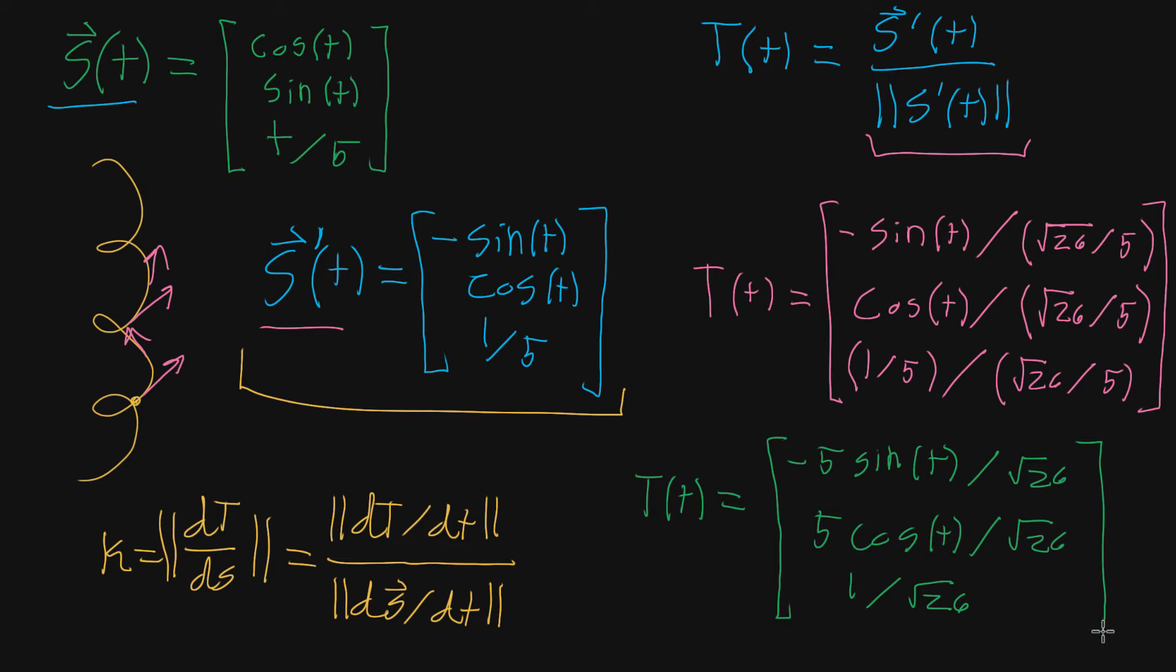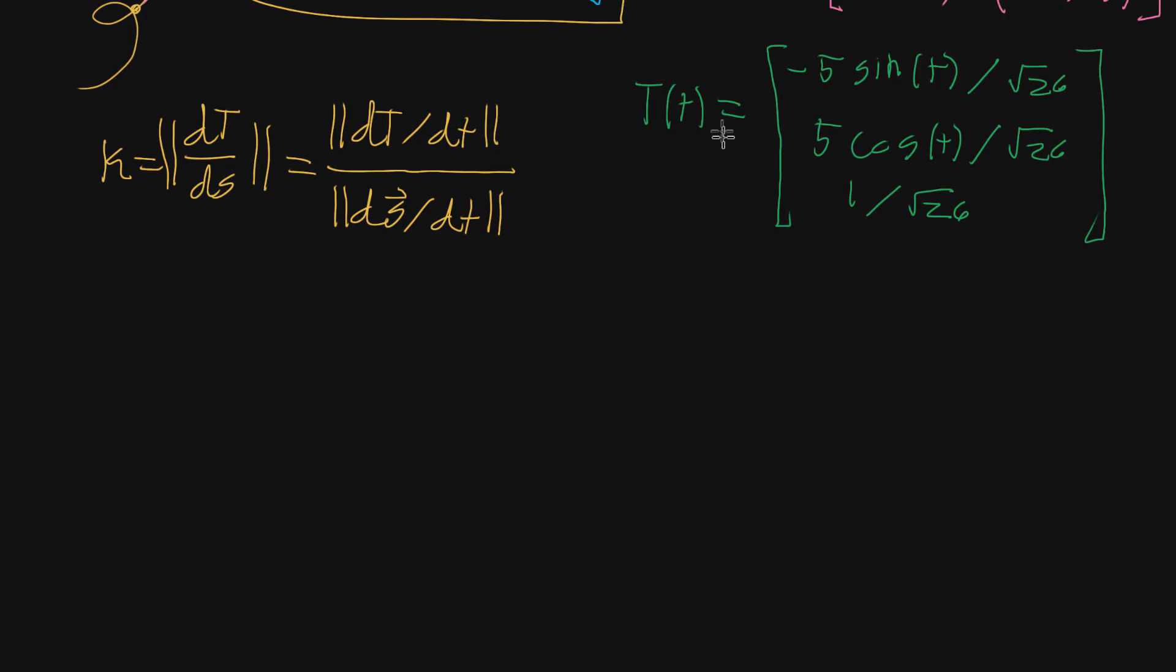All right, so the first step in using our curvature formula is going to be to take the derivative of this guy. We need the derivative of the tangent vector function. So we go ahead and start doing that: dT/dt. We just take the derivative of each component. So negative 5 sine goes to negative 5 cosine, and we divide out by that constant, square root of 26. Similarly, 5 cosine goes to negative 5 sine, since the derivative of cosine is negative sine. Negative 5 sine divided by square root of 26. And that last component is just a constant, so derivative is nothing—it's zero.